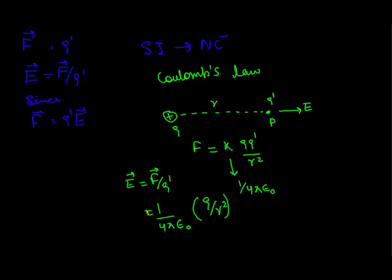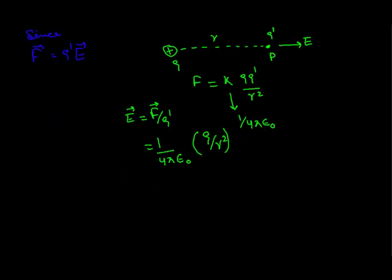Now direction of this electric field E is away from the charge Q if it is positive and it would be towards the charge Q if the charge is negative. Now electric field in terms of unit vector R̂ directed along the line from charge Q to point P would be E = KQ R̂/R². Where R is the distance from charge Q to point P and this equation holds for both positive and negative charges.